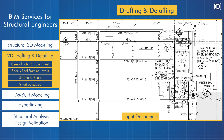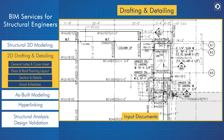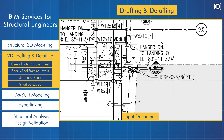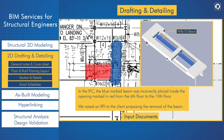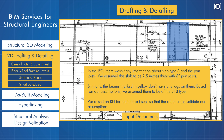During execution, we optimize designs by flagging errors and coordination issues in the input documents. For example, in the IFC, a blue-marked beam was incorrectly placed inside the opening marked in red from the 6th floor to the 10th floor — we raised an RFI to the client proposing its removal. In another case, there was no information about slab type A on the pan joists, so we assumed a 2.5-inch slab thickness with 6-inch pan joists. Similarly, beams marked in yellow had no tags, and we assumed them to be of the B18 type. We raised RFIs for both issues so the client could validate our assumptions.